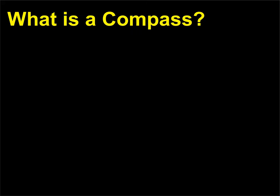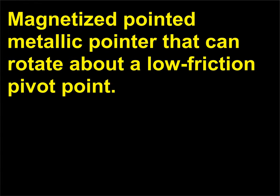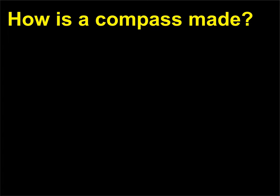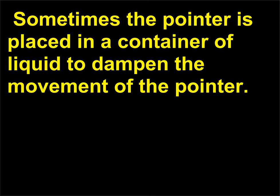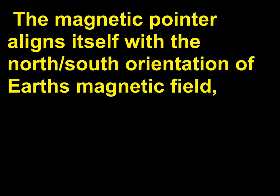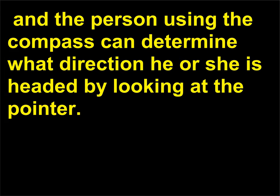What is a compass? A compass is a magnetized pointed metallic pointer that can rotate about a low-friction pivot point. Sometimes the pointer is placed in a container of liquid to dampen its movement. The magnetic pointer aligns itself with the north/south orientation of Earth's magnetic field, and the person using the compass can determine what direction he or she is headed by looking at the pointer.